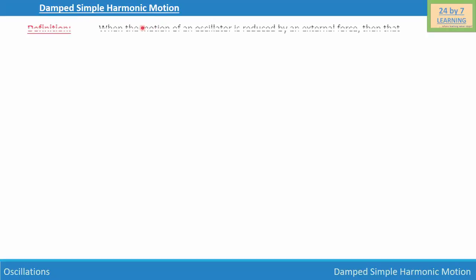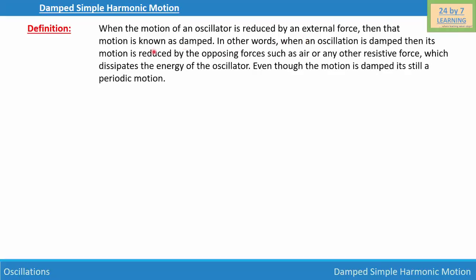Damped Simple Harmonic Motion: When the motion of an oscillator is reduced by an external force, that motion is known as damped. In other words, when an oscillation is damped, its motion is reduced by opposing forces such as air or any other resistive force which dissipates the energy of the oscillator. Even though the motion is damped, it's still a periodic motion.